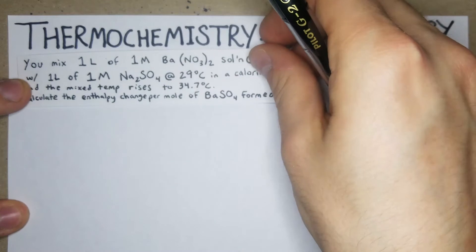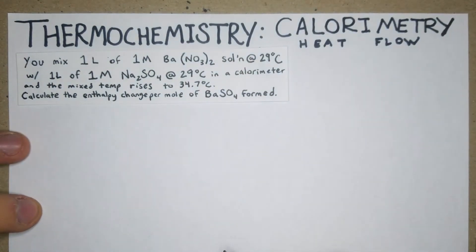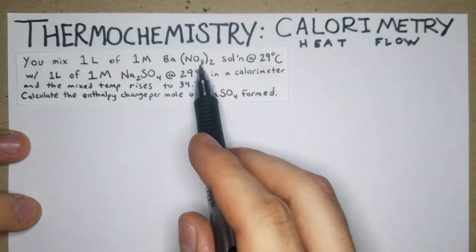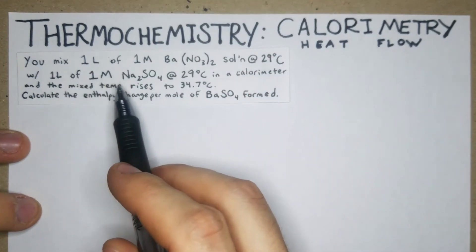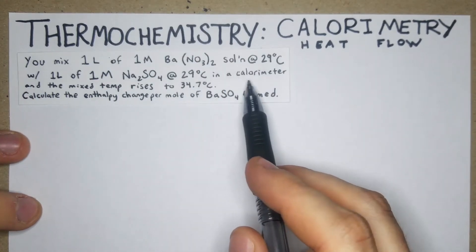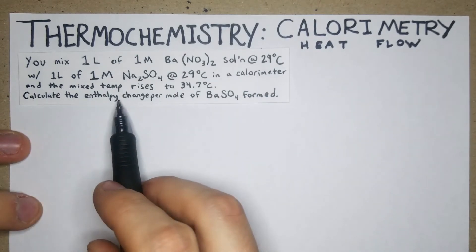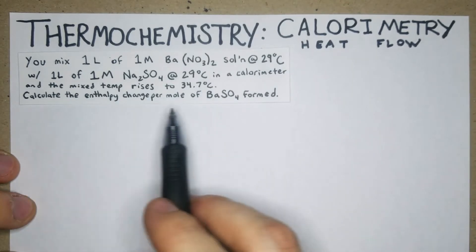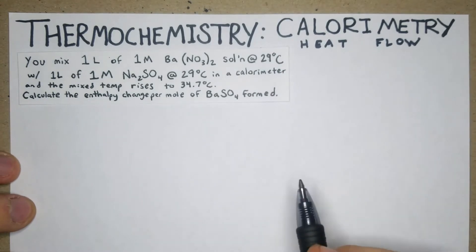I wrote out the problems to save time, so we'll just jump right in. You mix one liter of 1 molar Ba(NO₃)₂ solution at 29°C with one liter of 1 molar Na₂SO₄ at 29°C in a calorimeter, and the mixture temperature rises to 34.7°C. Calculate the enthalpy change per mole of BaSO₄ formed.